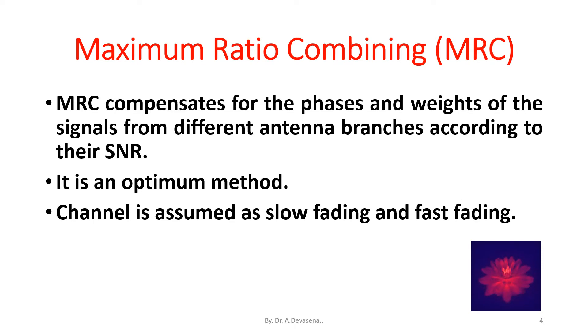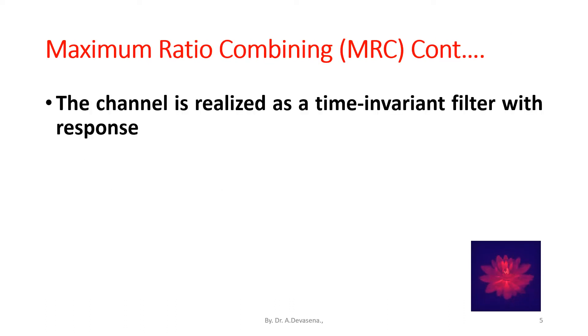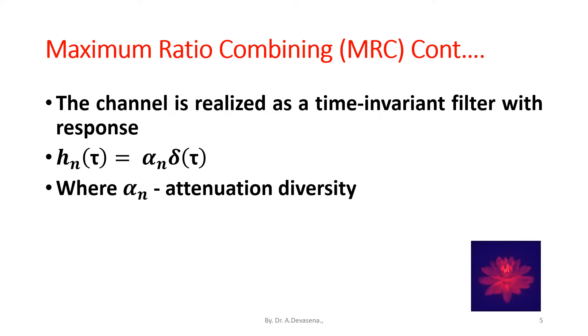Channel is assumed as slow fading and fast fading. The channel is realized as a time invariant filter with response h_n of tau equal to alpha_n delta of tau, where alpha_n is attenuation. Diversity N branch antenna weight is equal to W_MRC that is equal to alpha conjugate N.